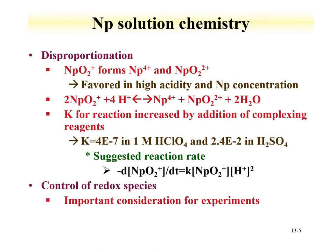In solution, neptunium can undergo disproportionation. For example, neptunium-5 can form neptunium-4 and neptunium-6 in solution. The equation here shows the reaction that occurs, where neptunium-5 with acid can go to neptunium-4 and neptunium-6. This disproportionation is favored in high acidity and high neptunium concentrations. So if you wanted to limit disproportionation in a solution, you would limit both the neptunium concentration of the pentavalent oxidation state and the acidity.